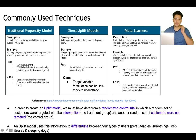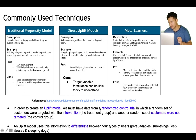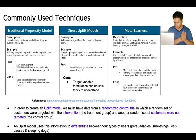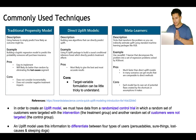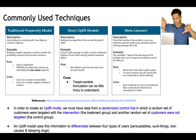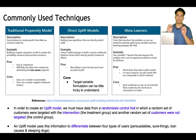In order to create an uplift model, the first and most important requirement is to have a randomized control trial in which a random set of customers were targeted with the intervention — the treatment group — and another random set were not targeted — the control group. This is a very important criteria: the data on which we train the model must come from a randomized control trial. When the assignment is random, the data will be unbiased and can give the real causal effect of the treatment.